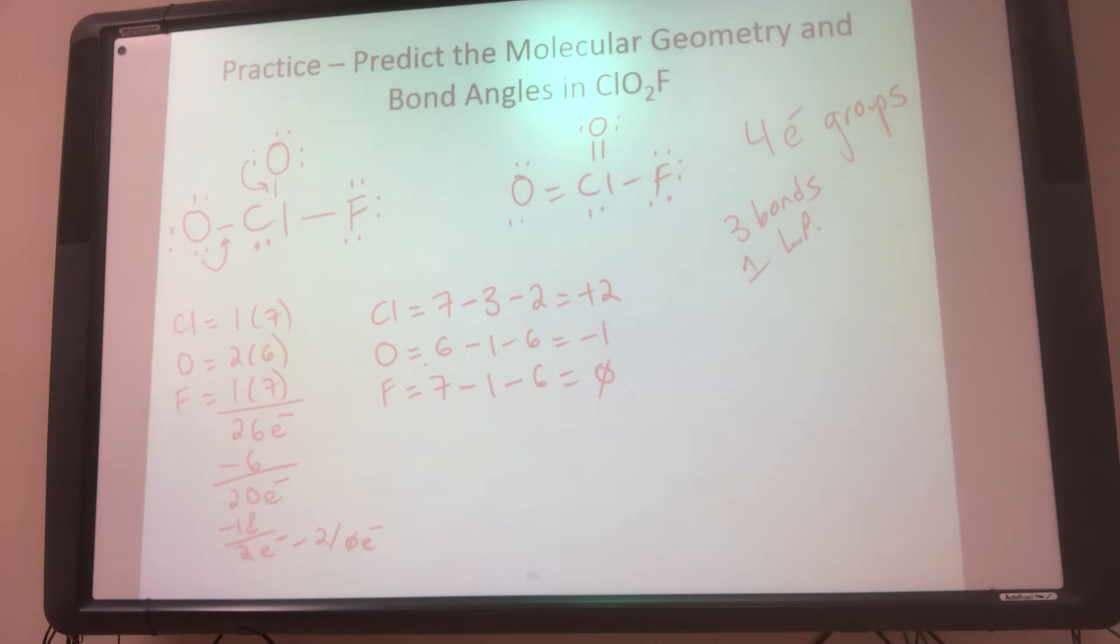So we move back. So my molecular geometry is going to be trigonal-pyramidal. And my bond angles are going to be less than 109.5. So that's how we go through and we figure out the geometry and we figure out the bond angles. And that's how we use our Lewis Dot picture to figure out our answers using our chart, too.